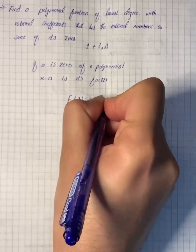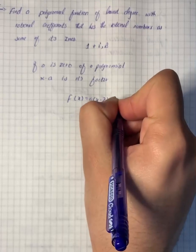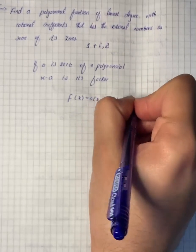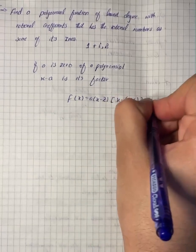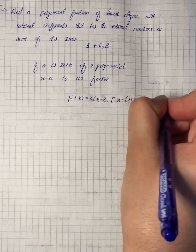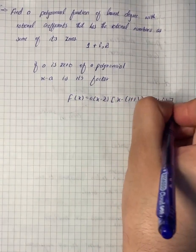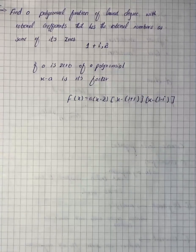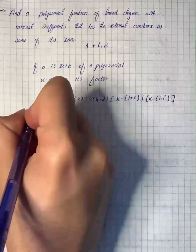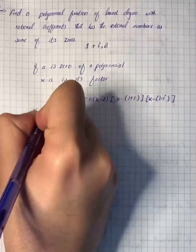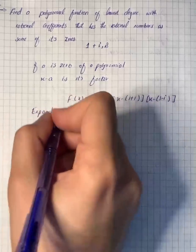We will expand by expansion. It becomes equals to a into x minus 2 into x minus into 1 plus i, x minus into 1 minus i.